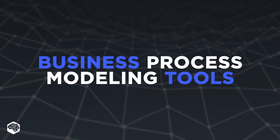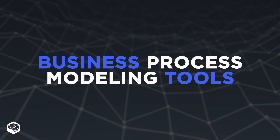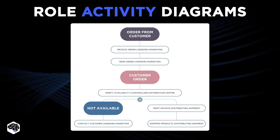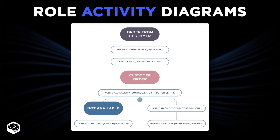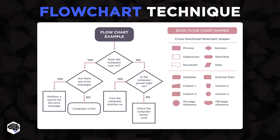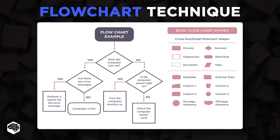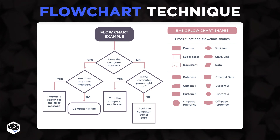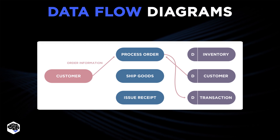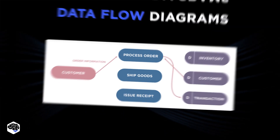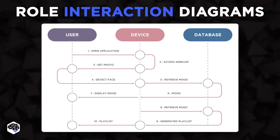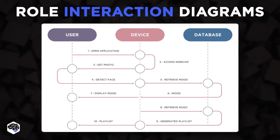Let's review business process modeling tools and techniques. First, role activity diagrams — they are commonly used to denote intangible roles or behaviors desired in a company. Next, flow chart technique — flow charts demonstrate the stages of a process in sequential order from input into the specific process to output. Next, we use data flow diagrams — they visualize how information moves from one place to another. We often need role interaction diagrams — these models demonstrate the interaction of various processes with each other in the system.